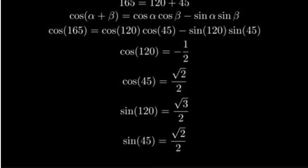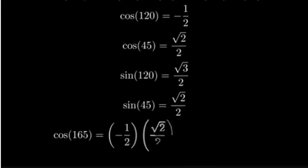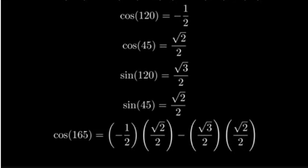Let's substitute these values into our equation. We get negative one half times square root of 2 over 2 minus square root of 3 over 2 times square root of 2 over 2.